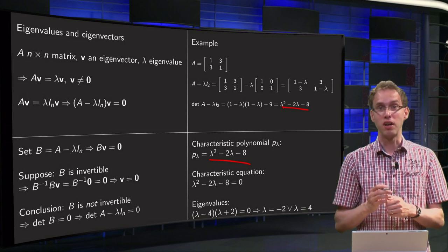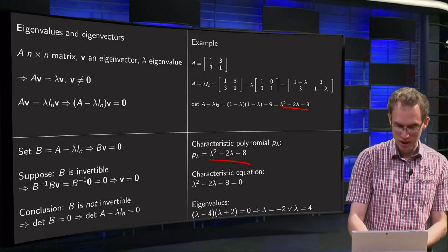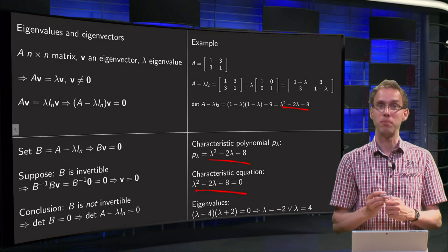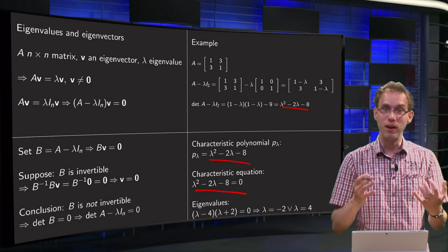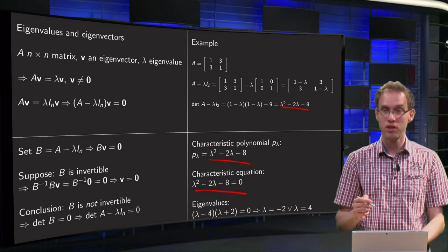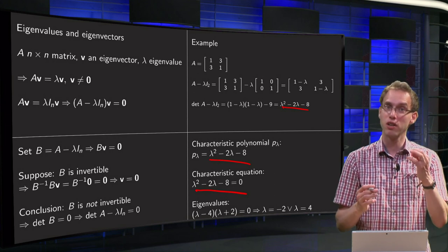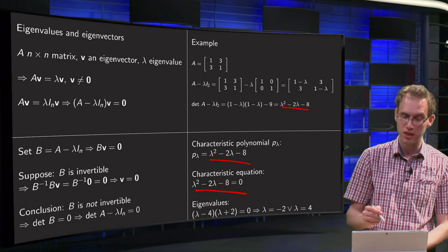If you want to have eigenvalues, you need to have the zeros of this polynomial, and that's what's called the characteristic equation of the matrix. So that's an equation in terms of lambda. And the eigenvalues are the zeros of the polynomial or the solutions of the characteristic equation.